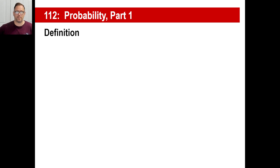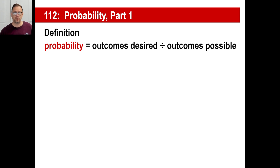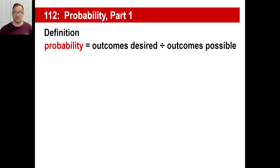Hey y'all, let's take a look at probabilities, part one. The definition of probability is basically this: probability is the number of outcomes that you want divided by the number of outcomes that are totally possible. So it's always a fraction. The most probability can ever be is one as a fraction, or 100%. The fraction depends on the possibilities that are out there. Let's take a look at a couple of examples.